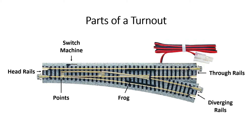Here you can see we have the head rails, which is the part at the front of the switch where the train comes in. We have our points, which physically move back and forth and determine what direction the train will go. We have our switch machine, which is the mechanism that moves the points. We have the frog where the rails come together, and then our through rails and diverging rails. In this video we'll be focusing mainly on the points and the switch machine.